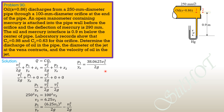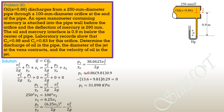Summing pressure from point 1 down to the manometer and across: P₁ + (specific weight of oil × 0.9) − (specific weight of mercury × 0.29) = 0. Specific weight of oil = 0.86 × 9.81. Mercury specific weight = 13.6 × 9.81. Solving for pressure at point 1: P₁ = 31.098 kPa.